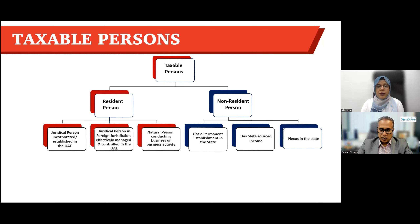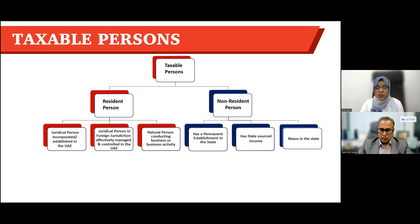One is the resident person and another is the non-resident person. Resident persons comprise three subcategories: number one, judicial persons incorporated or established in the UAE including mainland or free zone companies; number two, judicial persons in a foreign jurisdiction who are effectively managed and controlled in the UAE; and thirdly, natural persons who are conducting business or business activity under a license. The second category is non-resident persons, who are taxable persons that have a permanent establishment in the state, state-source income, or a nexus in the state.